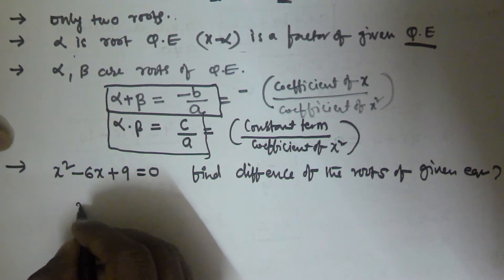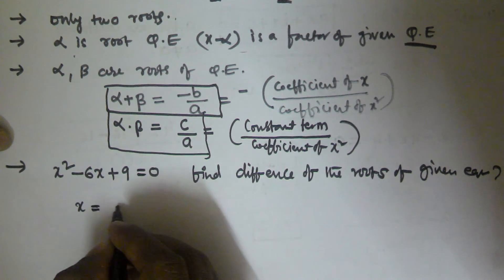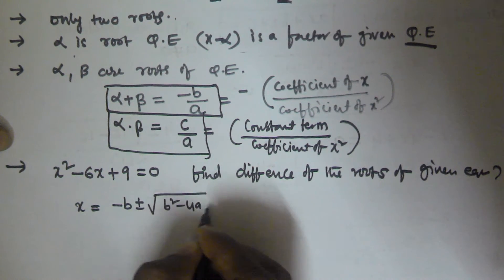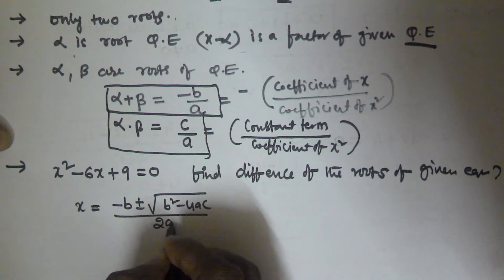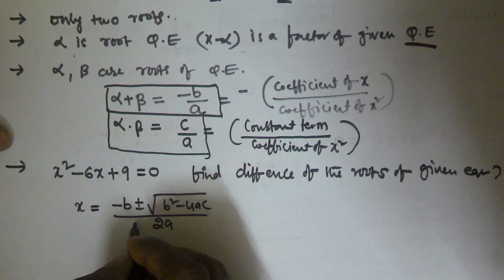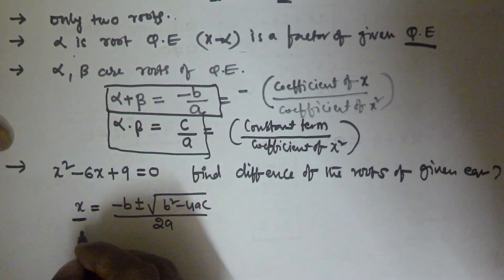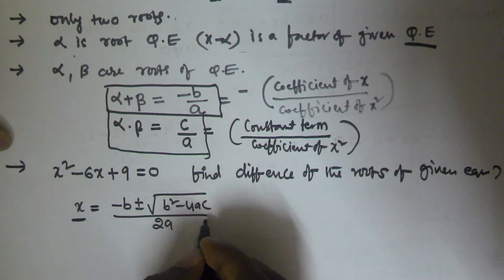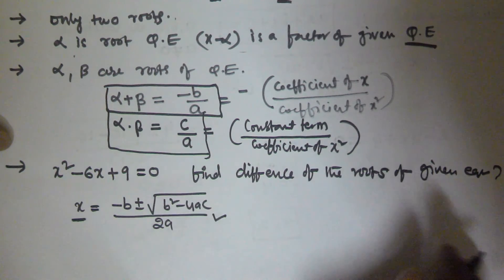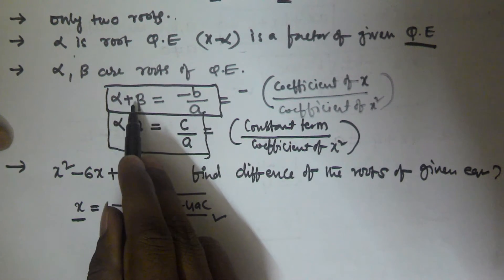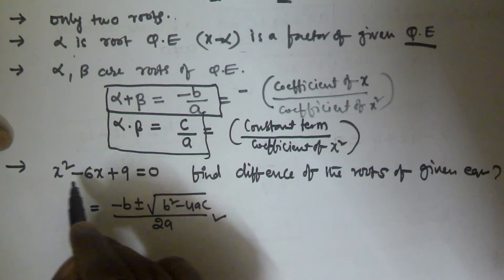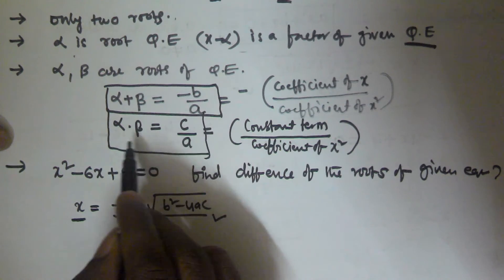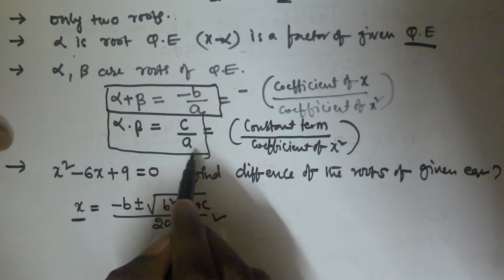There are two methods. One is to use the quadratic formula: x equals minus b plus or minus the square root of b squared minus 4ac, all divided by 2a — taking plus once and minus once to get two values of x. Another method uses the sum and product of roots properties, which I'll use here.